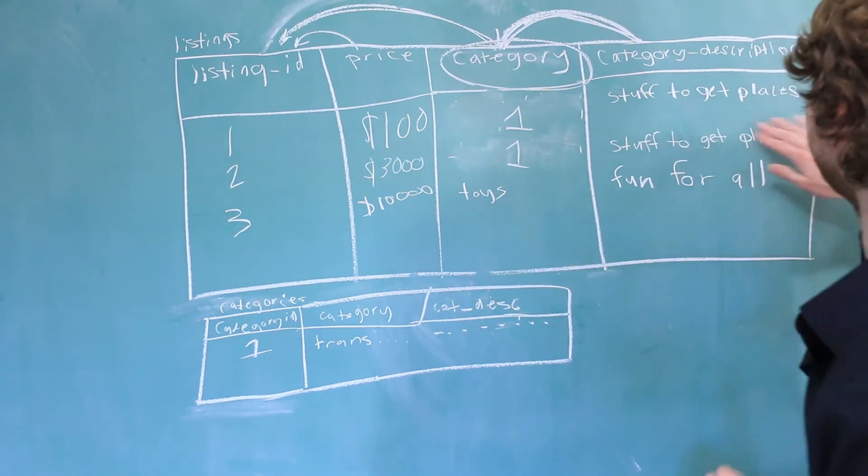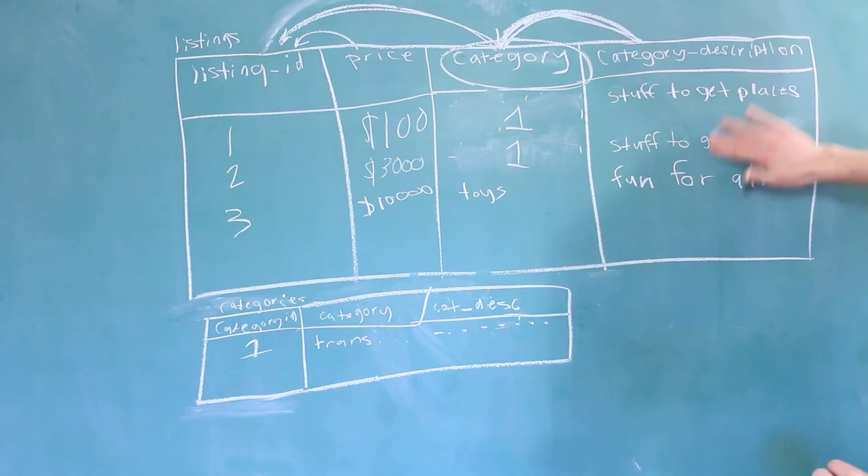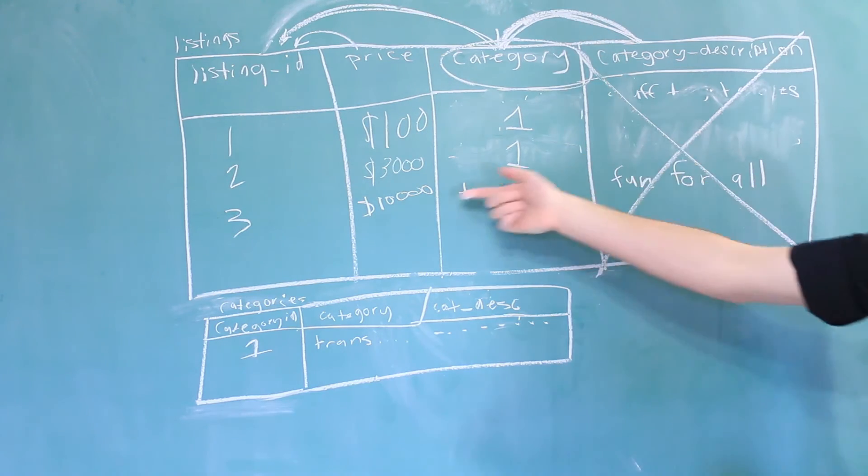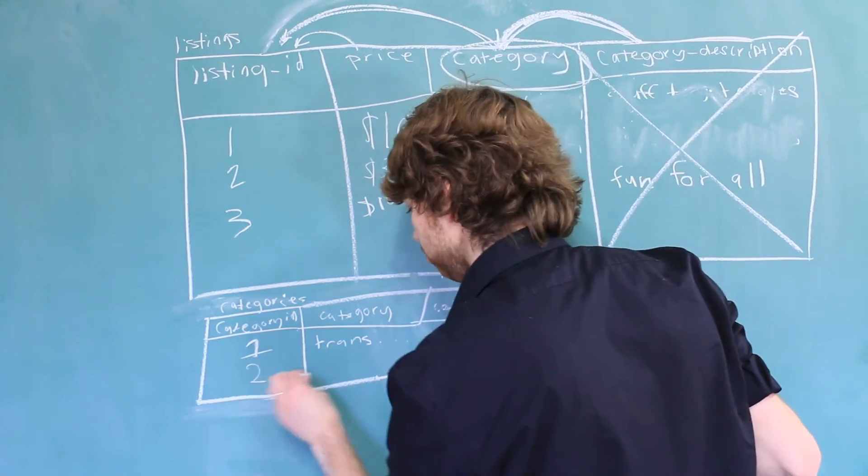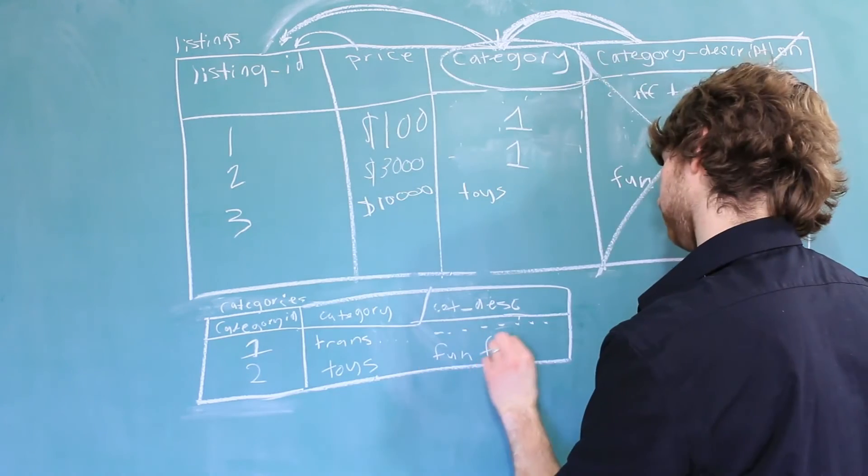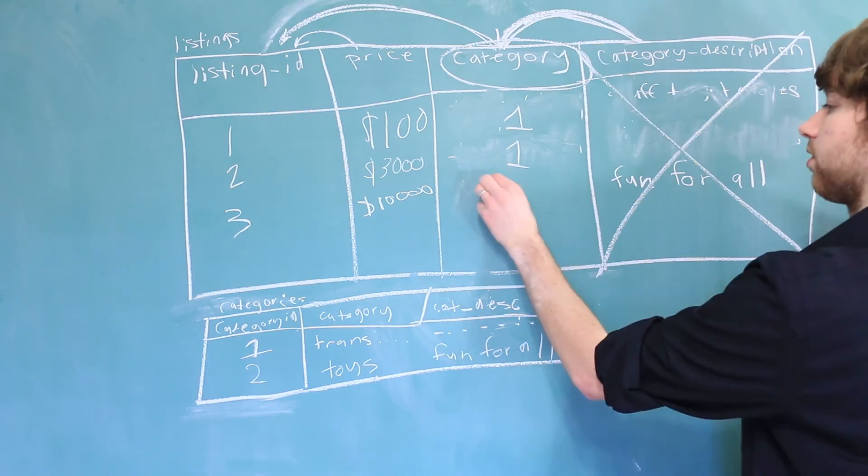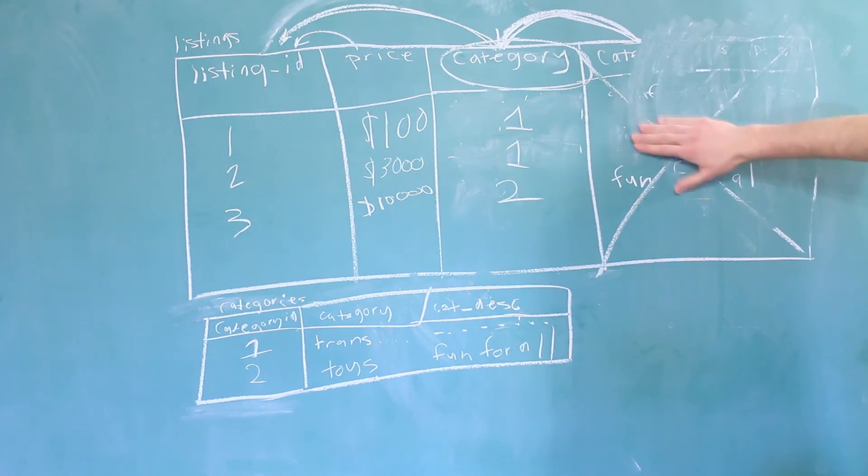One. And this is redundant too because we have all this information in here twice that we don't need. We can actually just get rid of this column altogether. And we also need to add this row though. So we'll say two, toys, fun for all. And then when we need to reference this row, we can just put a two. And that means this column is no longer needed.